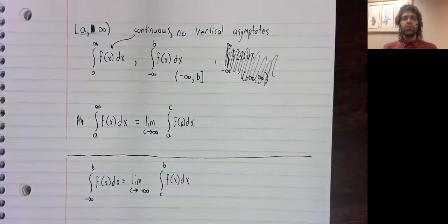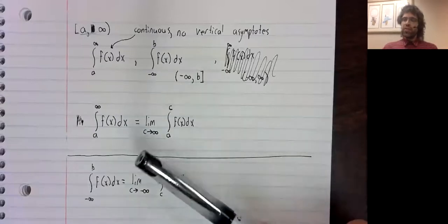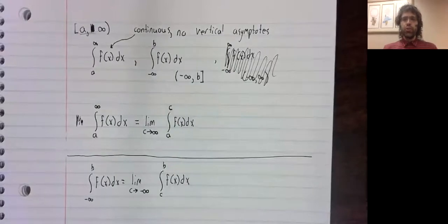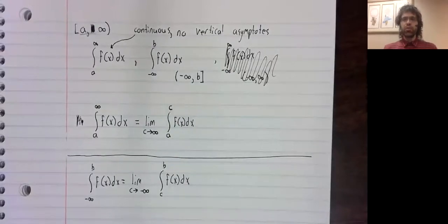we call the integrals convergent. If these limits do not exist, we call the integral divergent.